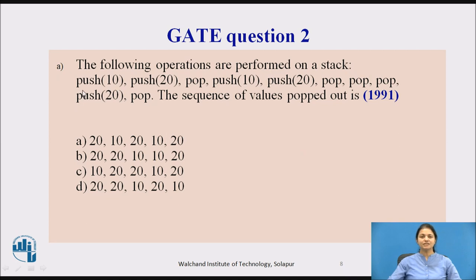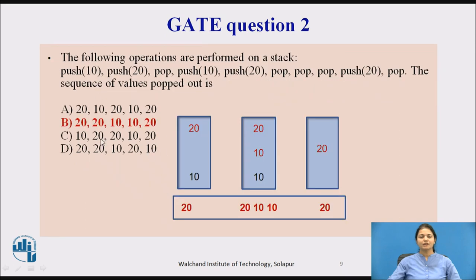We will trace the sequence: push 10, push 20, then pop 20. Then push 10, push 20, then pop gives 20, pop gives 10, pop gives 10. Three pops total. Then push 20 and immediately pop it, giving 20 last.